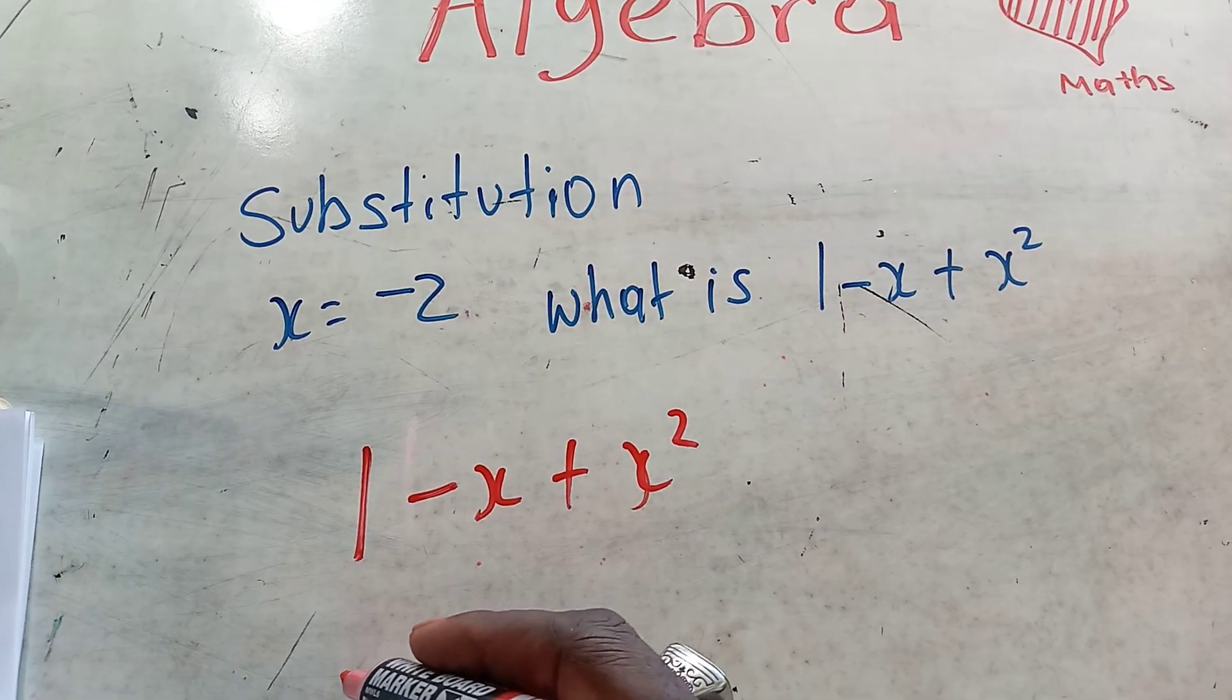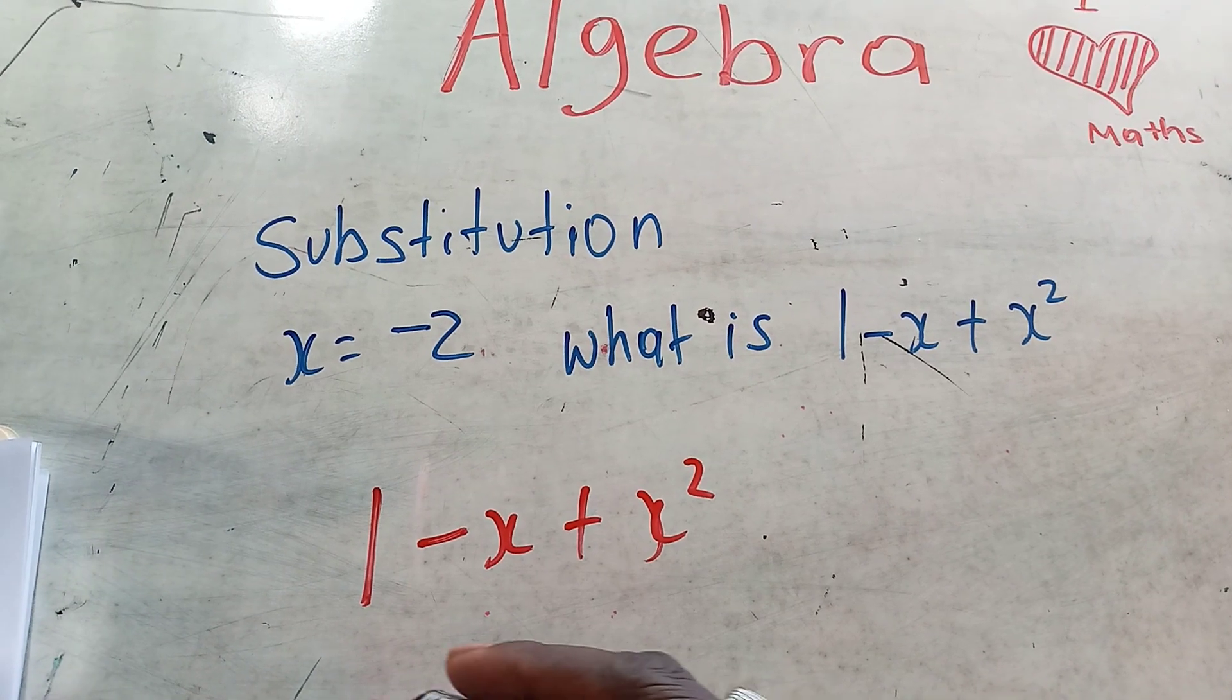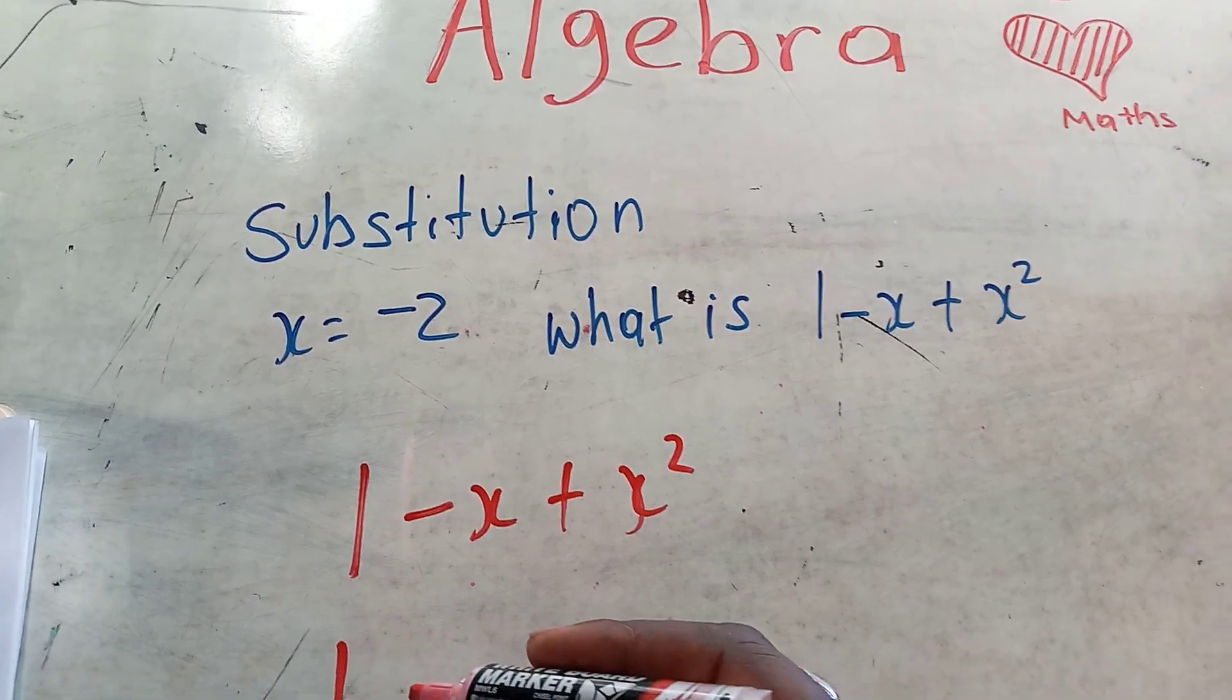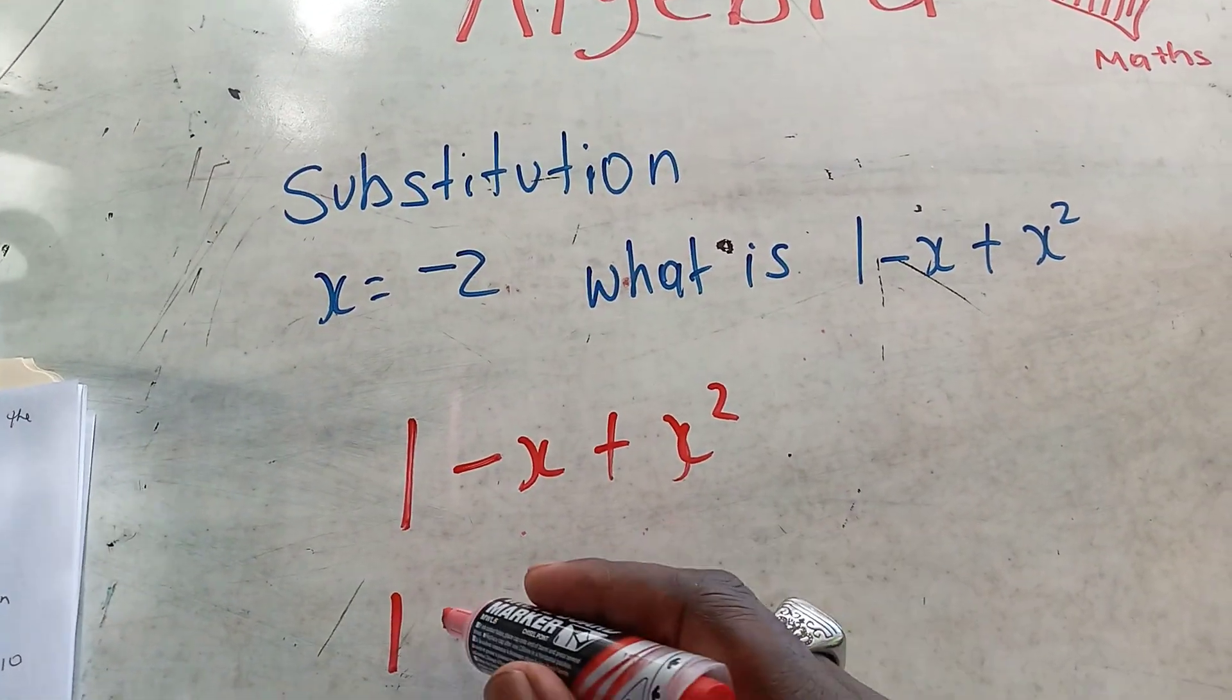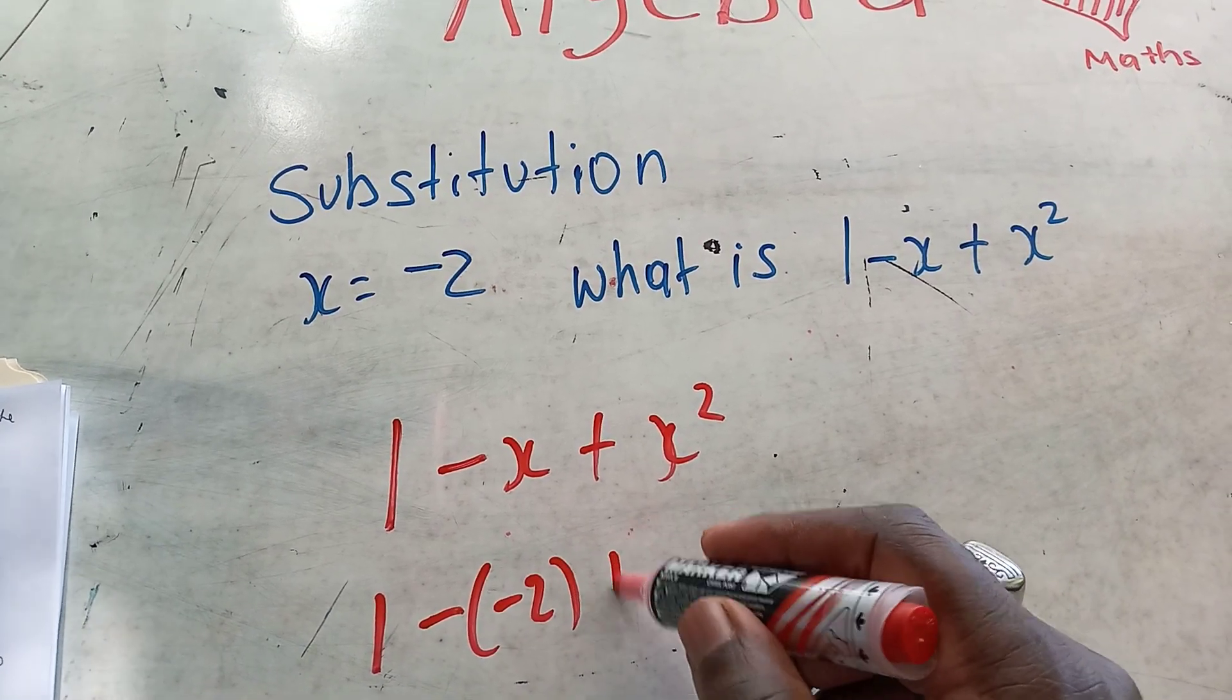And we are going to put the negative 2 wherever x is, so we have 1 minus negative 2 plus negative 2 square.